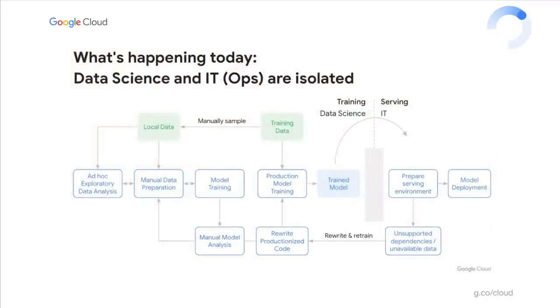Right now, in many enterprises and companies, there is huge isolation between data science and IT systems. I have seen customers where in the proof of concept phase, data scientists create a nice, small model on a notebook, but they just pass it to the IT department. The IT teams and operations engineers don't understand what's happening inside the machine learning model. So even if there are problems and they want to do some troubleshooting or monitoring, the IT department doesn't know what's going on inside the model. This is the problem of isolation.